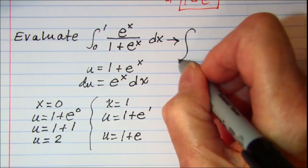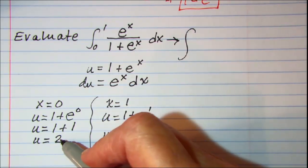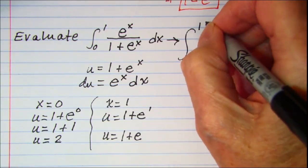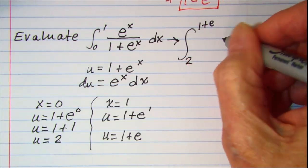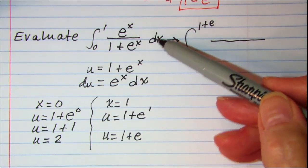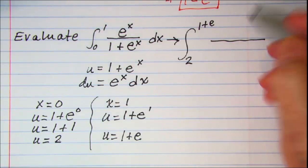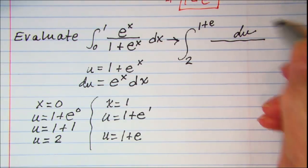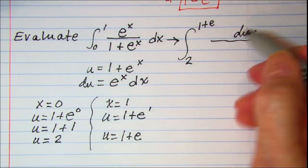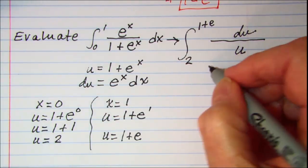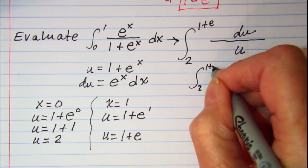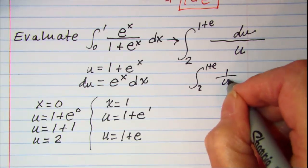This will become the integral from 2 to 1 plus e. I said e to the x dx I can replace with the du. And then 1 plus e to the x is u. Basically we're doing the integral of 1 over u du.